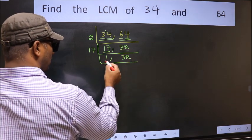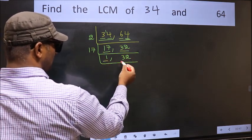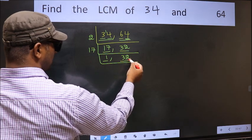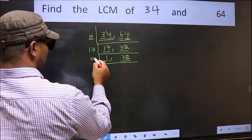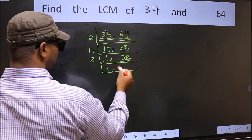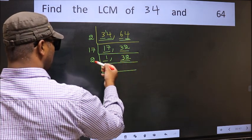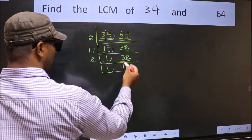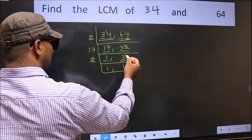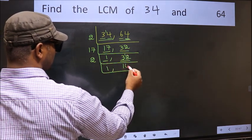Now we got 1 here, so focus on the other number, 32. Last digit is 2 — even, so take 2. First digit is 3; a number close to 3 in the 2 table is 2 times 1 is 2. So 3 minus 2 is 1, carried forward: 12. When do we get 12 in the 2 table? 2 times 6 is 12.